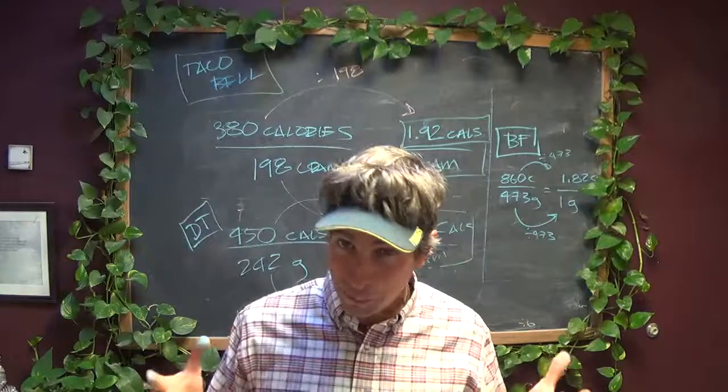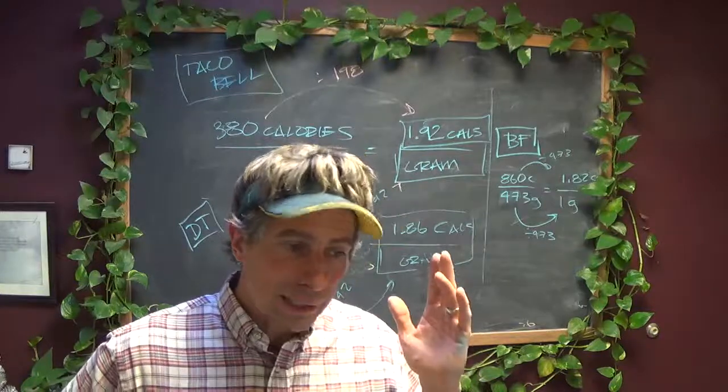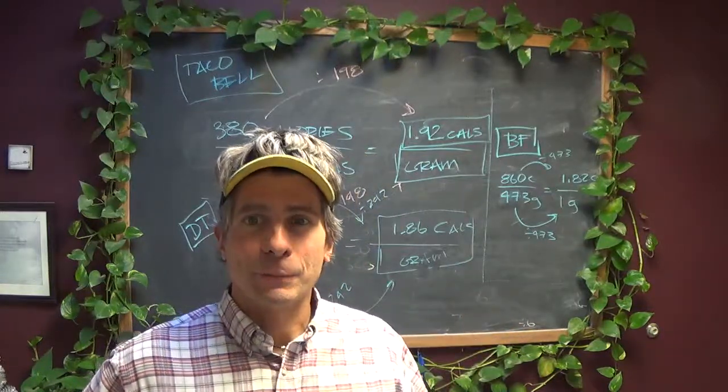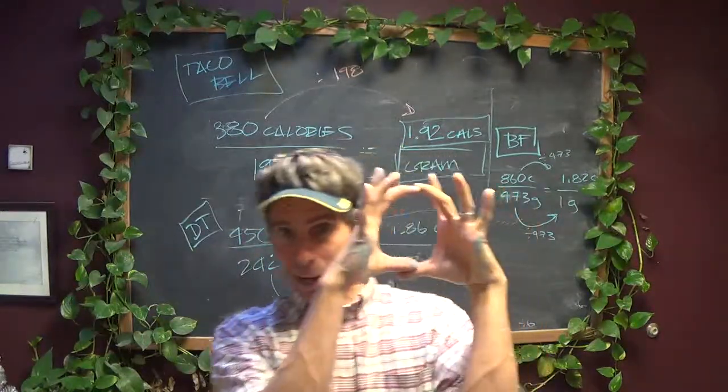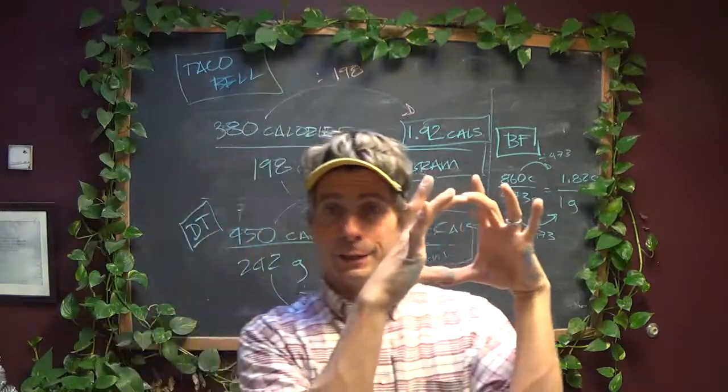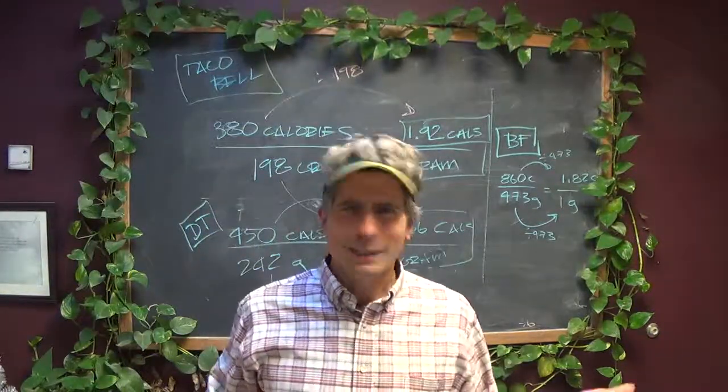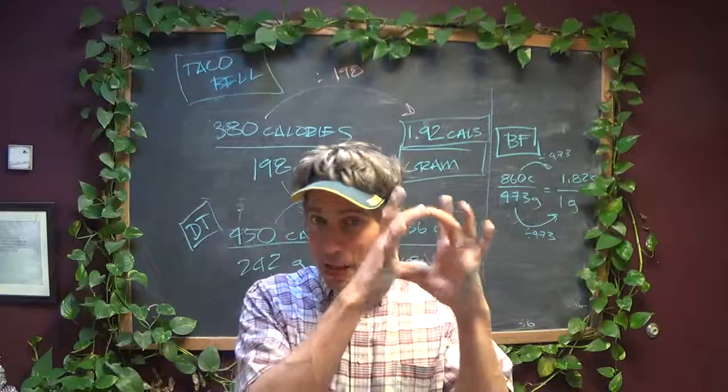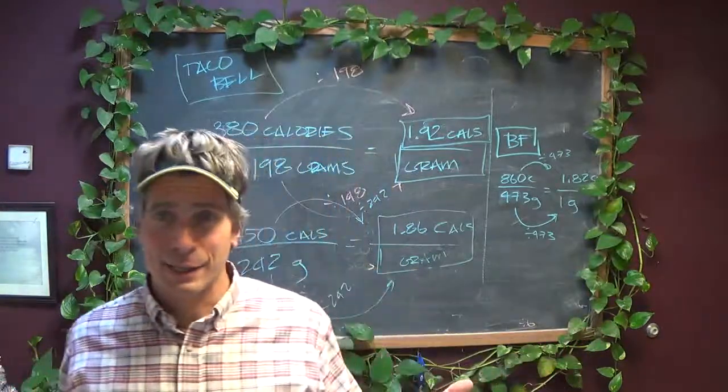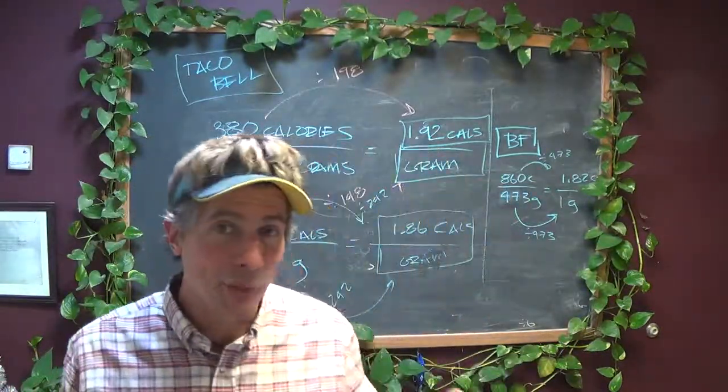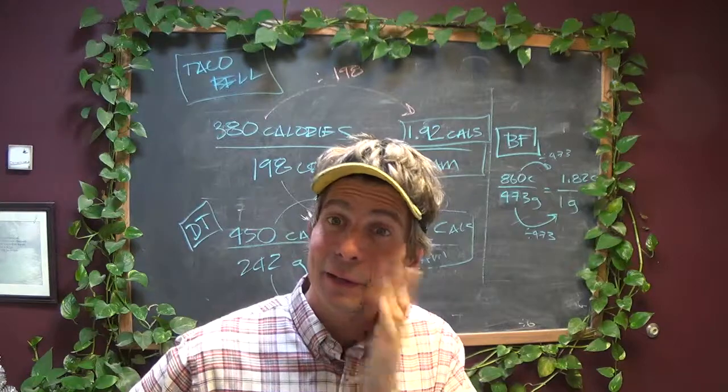If you've ever been to Baja Fresh, their burrito plates are humongous compared to a little tiny Del Taco or Taco Bell bean burrito. You're actually getting more calories because you're getting more food. It's like looking at a box of Cheerios from Costco and then looking at one of those little mini boxes from the variety pack. The Costco box makes a lot more sense if you're going to eat it all. That's an apples to apples comparison. Unit pricing allows you to do apples to apples comparisons. Anyway, that's all I want to talk to you about today and I'll see you in class.